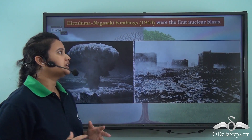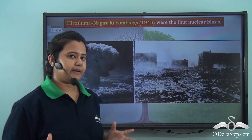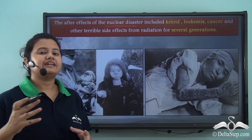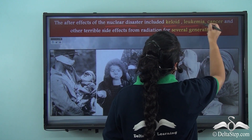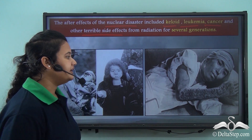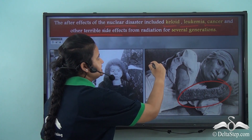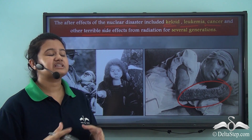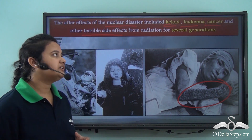We all know about the historic Hiroshima-Nagasaki bombings of the Second World War that occurred in 1945 in Japan. The after-effects of this nuclear disaster were indeed very severe. The survivors suffered from critical health issues like keloid, leukemia, cancer, and other terrible side effects. Keloid is a type of skin disease where you have extra scar marks on your skin. Not only the immediate survivors but also upcoming generations suffered from these diseases, showing how harmful radiations can be.